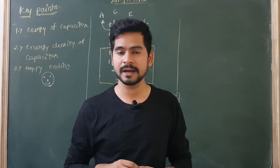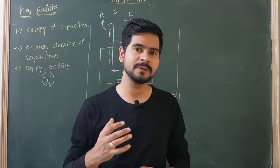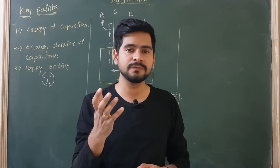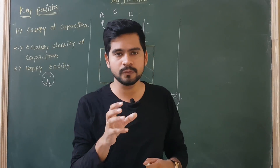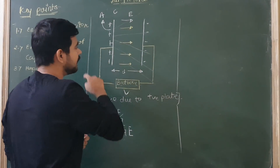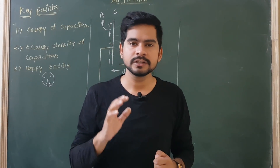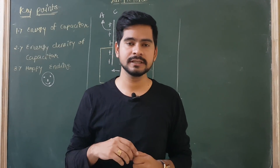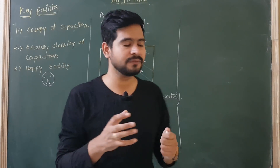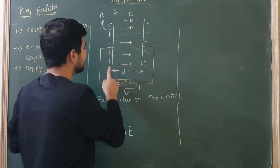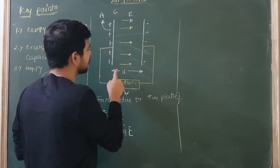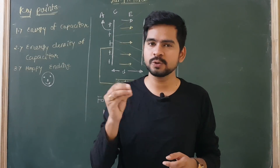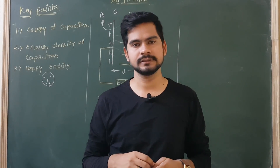Remember the law of conservation of charge — a battery never creates charge. The battery only provides a drift; it provides a kind of field, and because of that field, charges are moved. When these charges move from one place to another through the electric field, work is done on them, and that work is stored as energy in the form of an electric field.